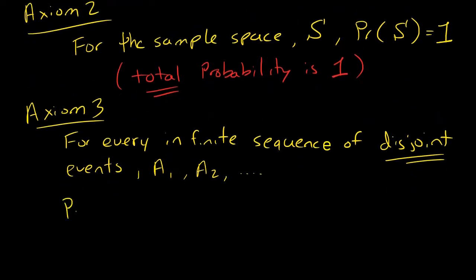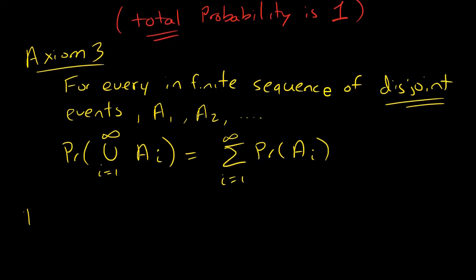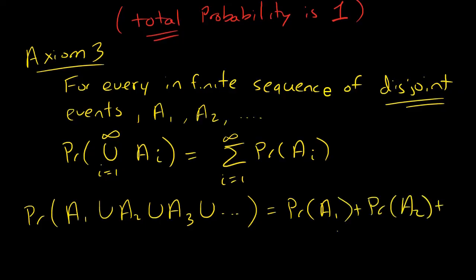If I wanted to find the probability of the union of all of these disjoint events - in case you're not familiar with this notation - basically what I'm saying is the probability of A1 union A2 union A3 union dot dot dot all the way to infinity equals the probability of A1 plus the probability of A2 plus the probability of A3 plus dot dot dot forever.